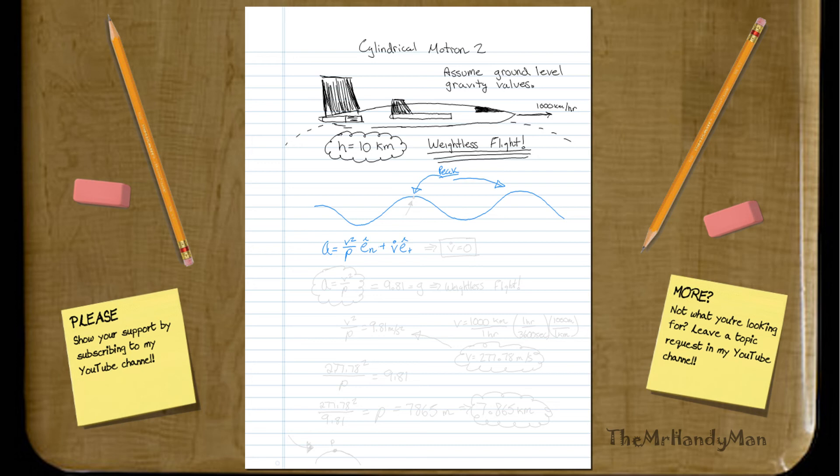Since we know that we're going at constant velocity of 1,000 kilometers an hour, we know that V dot will equal zero. Pretty much all the art in keeping us weightless for even just at the peak of one of these points, to get us weightless, we need to have a minimal velocity of what? And that's what we're trying to solve for. Or, sorry, a minimal radius or arch of what? Like, what does the radius need to be?